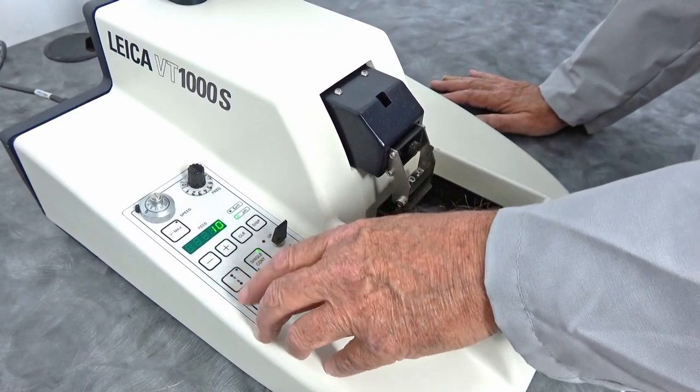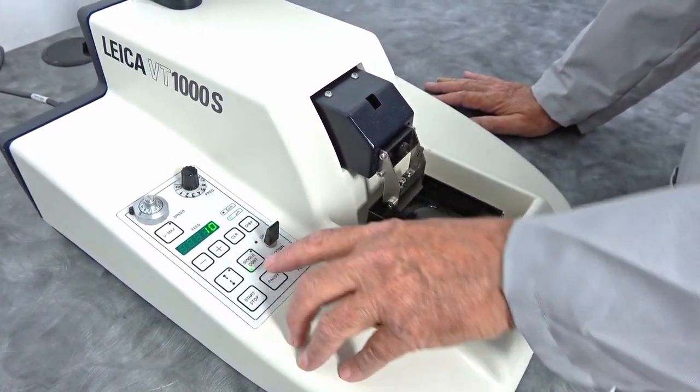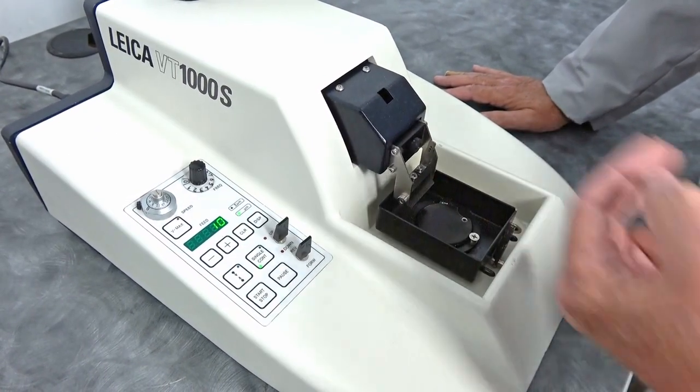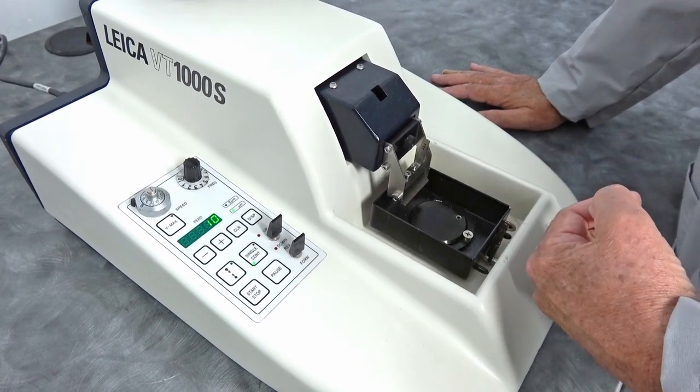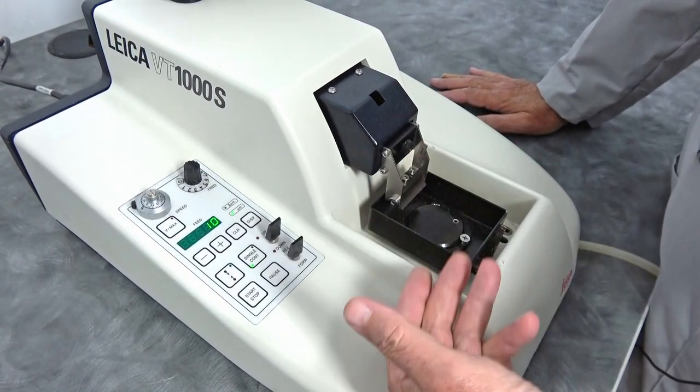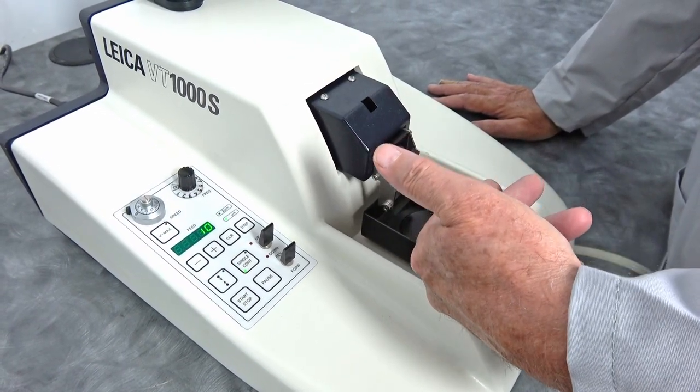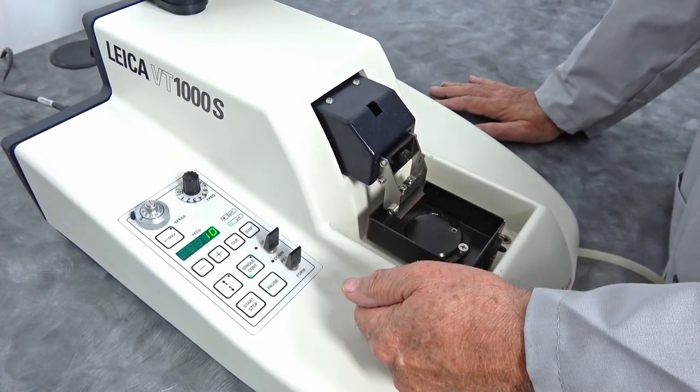You can also do a continuous feed, which is the second push of the button. And then it will keep cutting that sample each time raising the sample up to meet the new cutting surface.